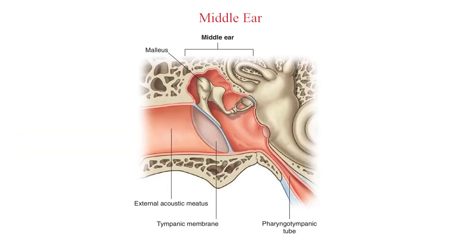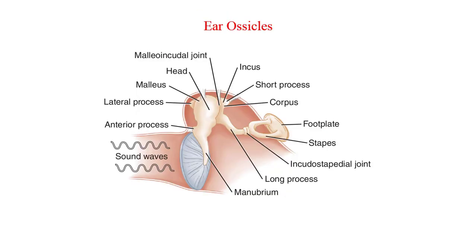The middle ear is a small but extremely important space occupied by three of the smallest bones of the body. By birth, the middle ear is adult size, and the ossicles and tympanic membrane are almost as large as they will ever be. The bones of the ear, known as the ossicles, include the malleus, incus, and stapes.